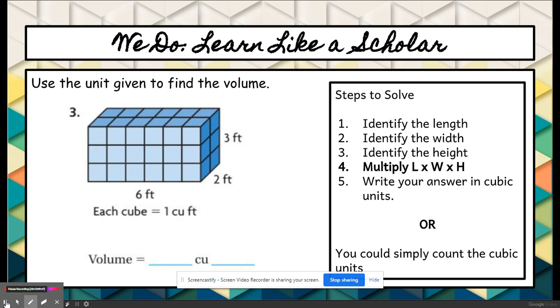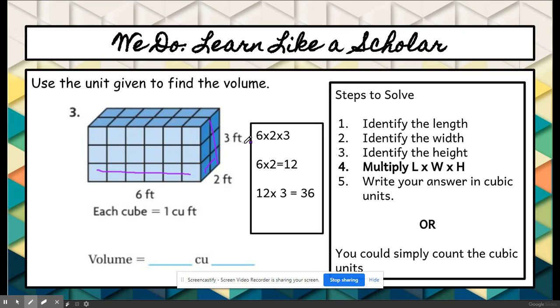We are going to do another one together. Remember, you could simply count the units, but I really recommend using length times width times height. First, the length is 6, the width is 2, and the height is 3. So length was 6, width was 2, and height was 3. I broke it down and solved 6 times 2 first and got 12. Then I multiplied 12 by 3 and got 36. So the measure here would be 36 cubic feet. The measure they're using is feet.